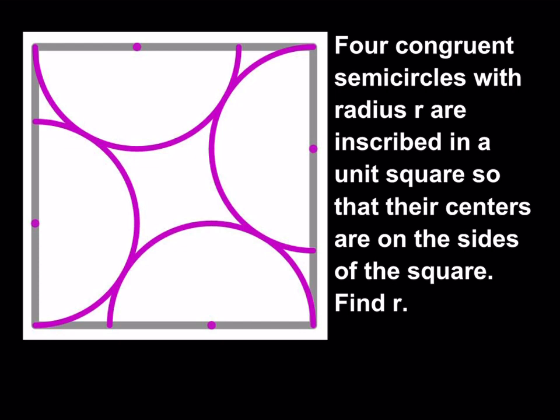We have four congruent semicircles with radius r that are inscribed in a unit square so that the centers of the semicircles are on the sides of the square and we're supposed to find the radius.